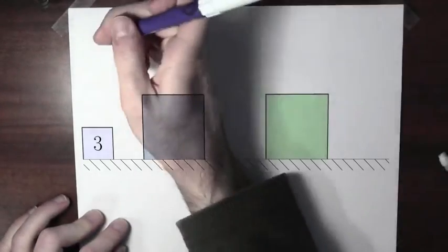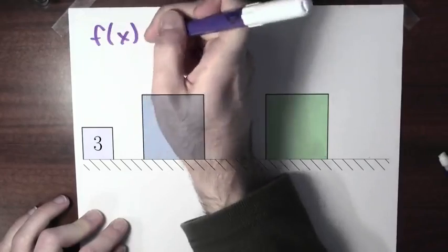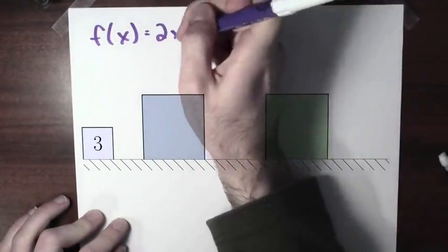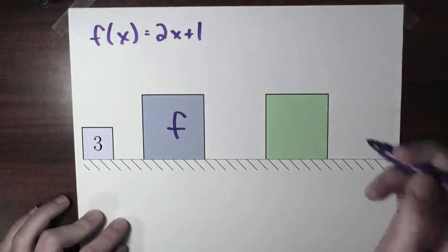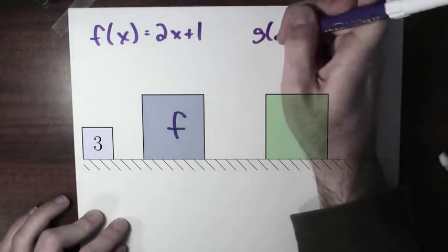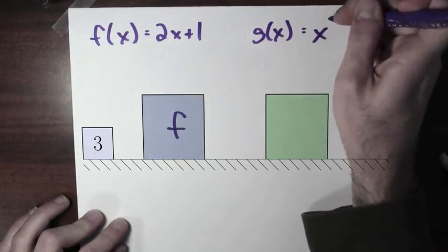Let's pick out what these functions should be. Maybe the first function I'll call f, and f of x will be 2x plus 1. So I'll call this function f. And maybe the second function I'll call g, and g will take its input and square it. So g of x will be x squared. So I'll label this function g.